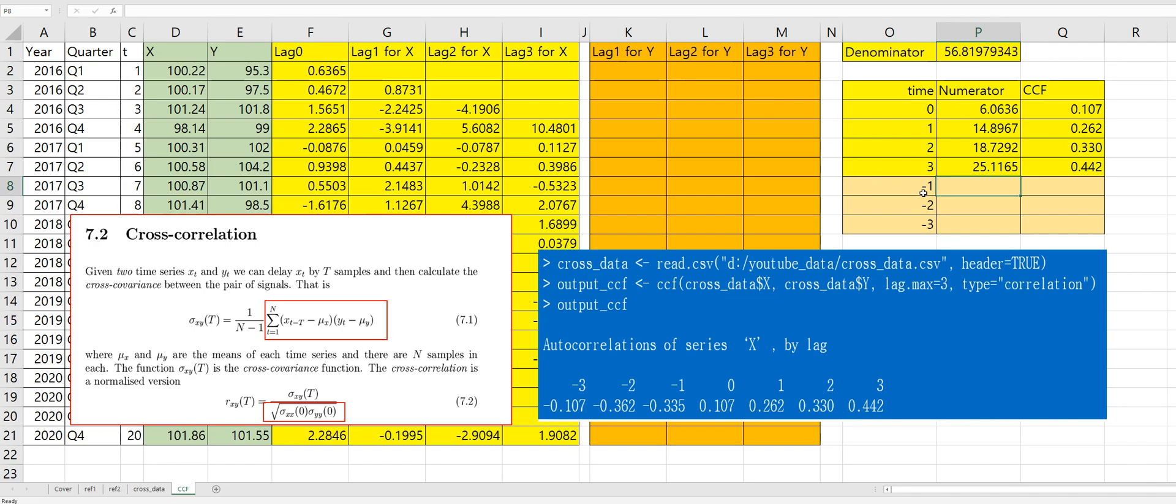Right, then let's move on to calculate minus one lag and minus two lag and minus three lag. So for lag one, Y variable value minus average of Y variable times first value of X variable minus average of X variable.